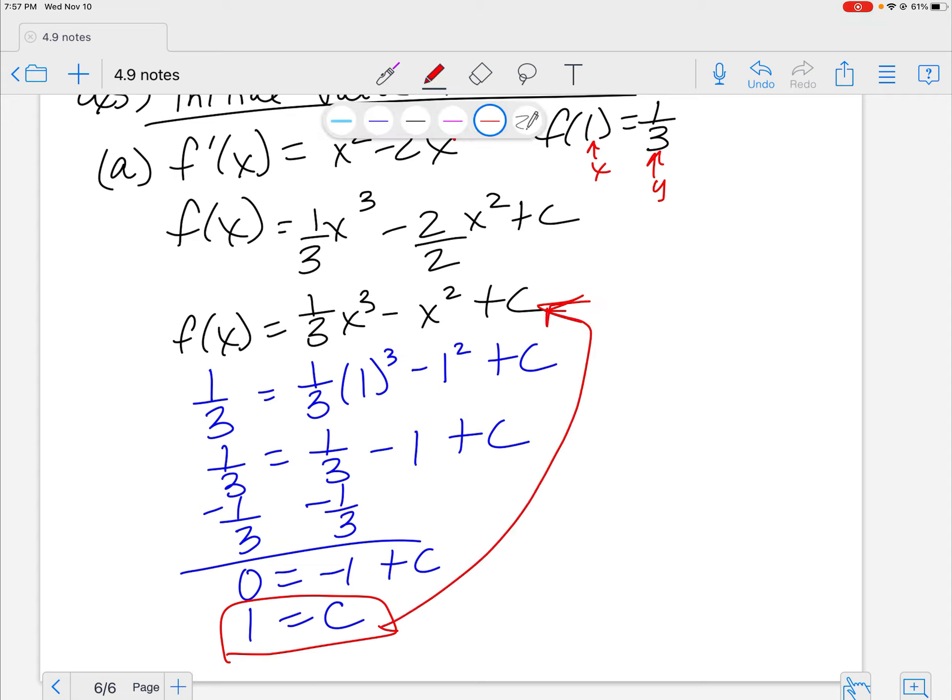This guy is coming up here, and I now have f of x is equal to 1/3 x cubed minus x squared plus 1, and that is my original function. That's a 1/3.